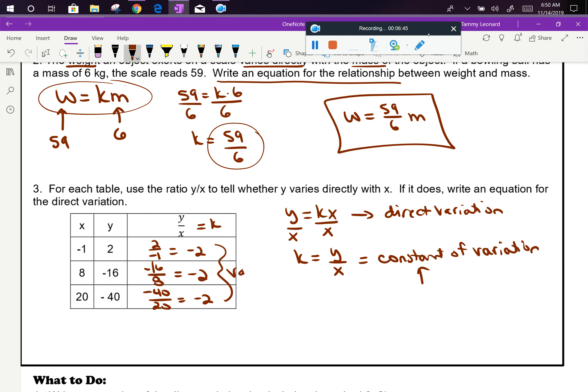Since this value is constant, is always the same, I can say yes, it is a direct variation. My evidence is the fact that the constant of variation is in fact constant.